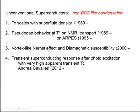The third signature is the Nernst-like effect onset and diamagnetic susceptibility, pioneered by Hwang and Ong at Princeton from 2000. The fourth signature is the transient superconducting response after photo-excitation, which appears to show a very high transient TC, pioneered by Andrea Cavalleri — and we also saw the presentation of Shimano-sensei today.